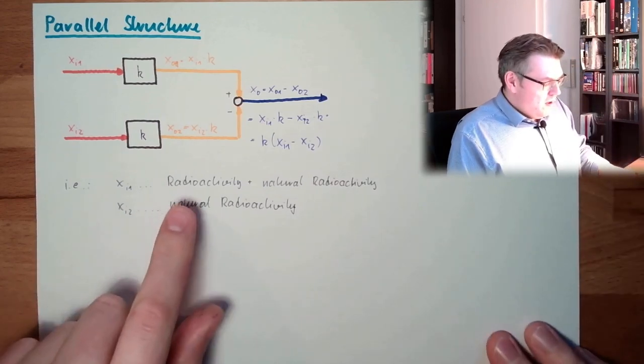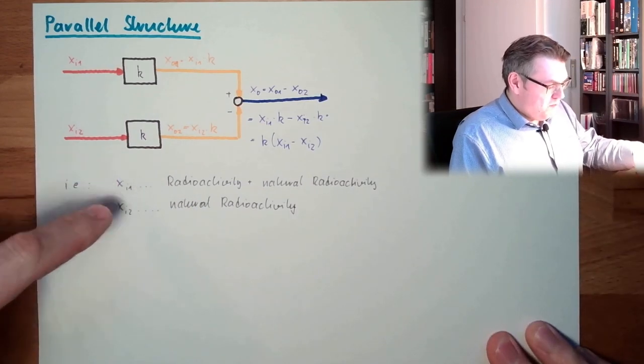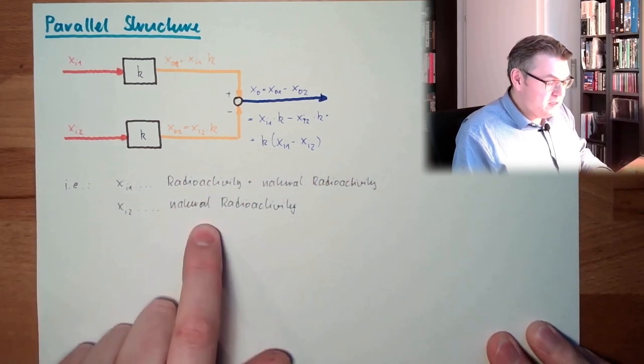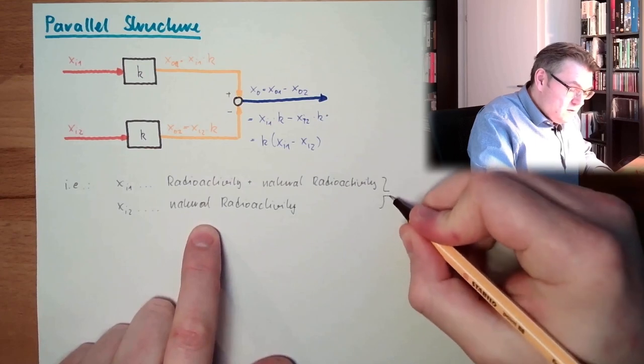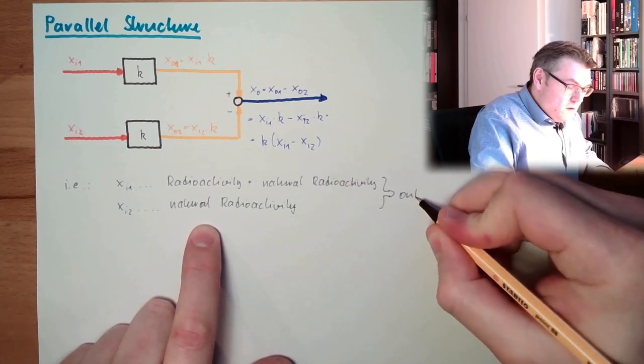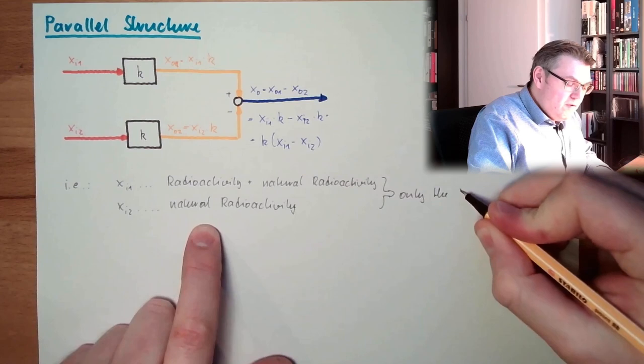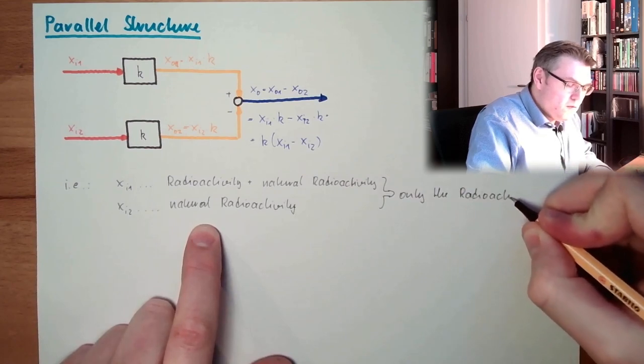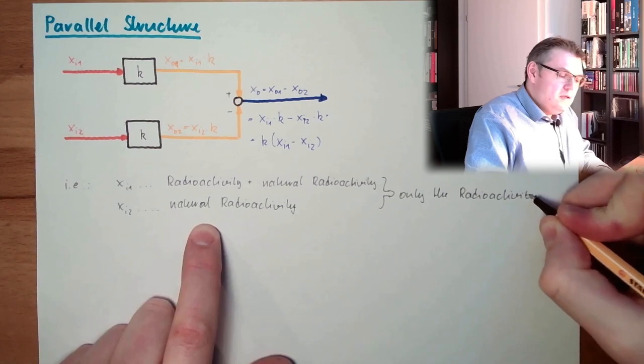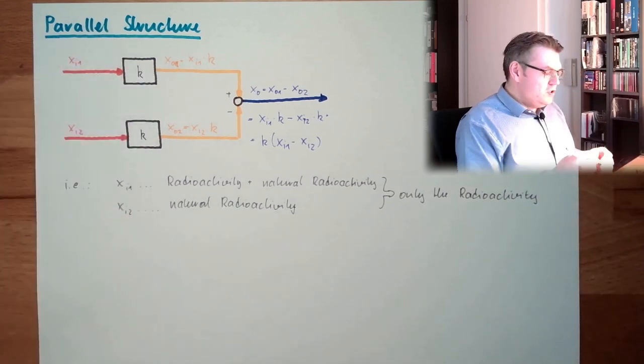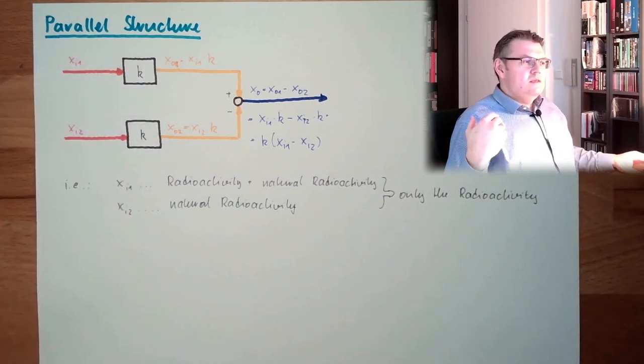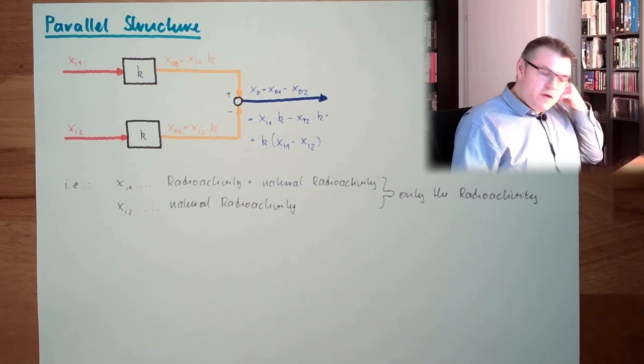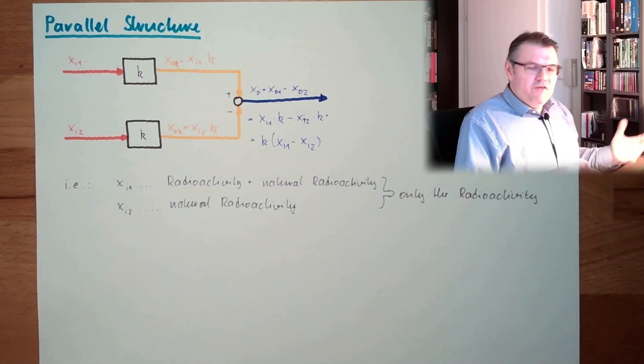Now, if I'm measuring this minus this, here I have plus natural activity, here minus natural activity, the result is only the radioactivity. I could use this structure to suppress some failures, some errors I don't really care about. And that's it.